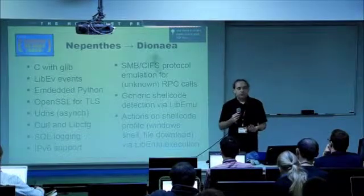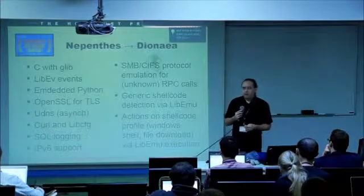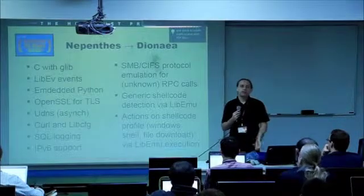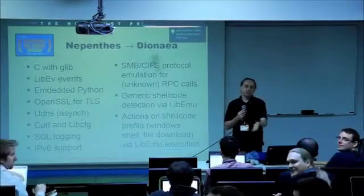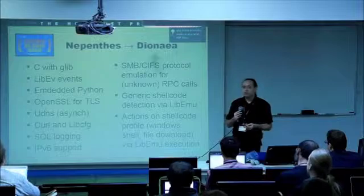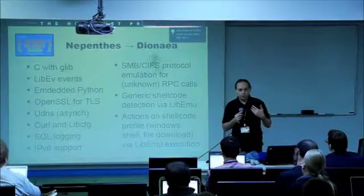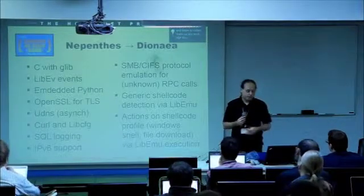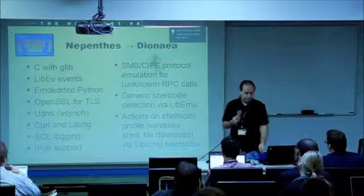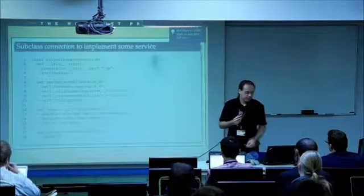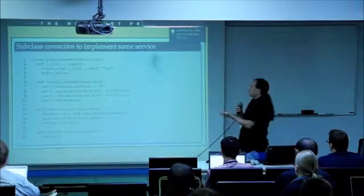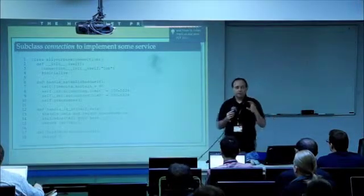Diannea was developed in GSOC. It uses common libraries like lib-event for scalability. It uses Python as an embedded scripting language to develop vulnerability modules. It already supports IPv6 out of the box, so you can run IPv6 honeypots. In particular, it has an implementation of the SMB network stack written by Mark Schrozer. This means if somebody connects to your honeypot on port 445 and makes an RPC call, we can understand what the protocol is attempting. Using lib-emu, this can detect shellcode generically and perform actions against it.